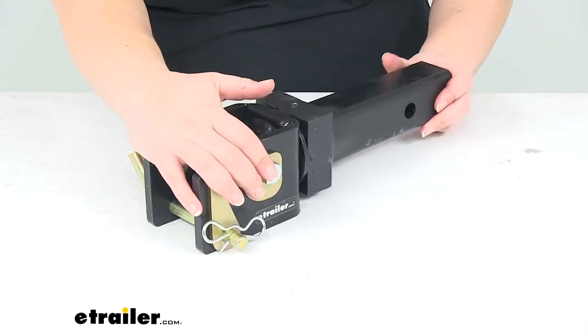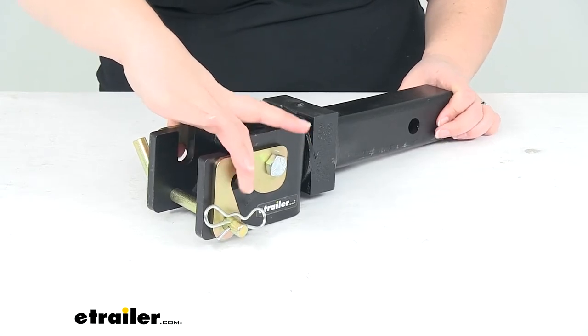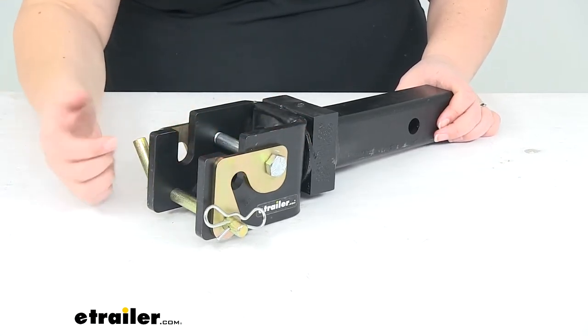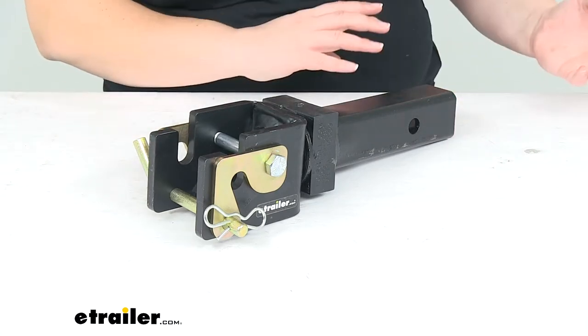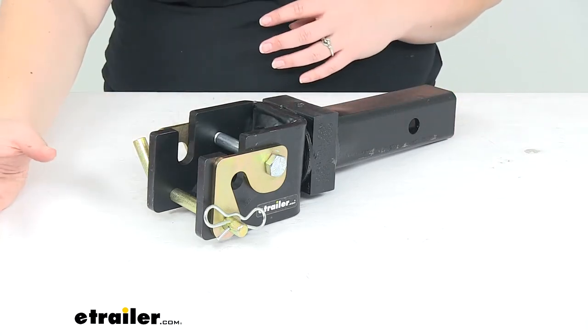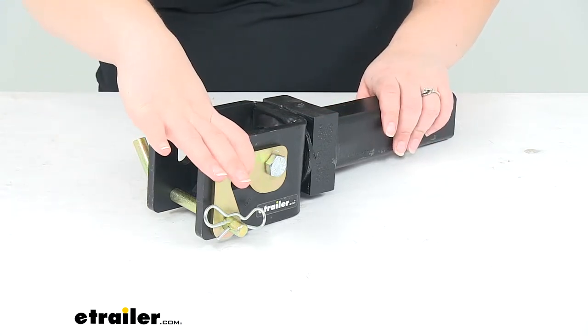It's going to work with a lock and roll coupler to fit inside there and provide even more movement for our connection between our car or our towing vehicle and our trailer.